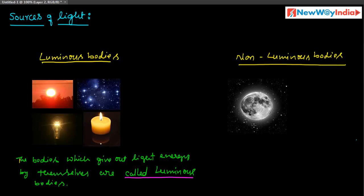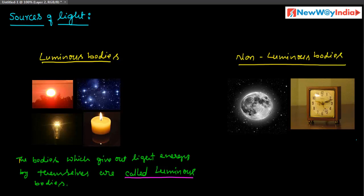This is a non-luminous body. Different objects in our room reflect light, and that reflected light reaches our eyes, so we can see them — such bodies are called non-luminous bodies. For example, a clock on the table reflects the light in the room — this type of body is called a non-luminous body.